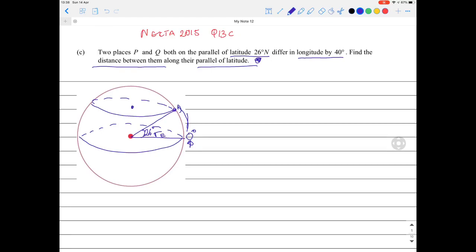On this latitude there is point P and point Q somewhere. Let's say they're there, and between them there's an angle of 40 degrees. We need to find the distance between them.